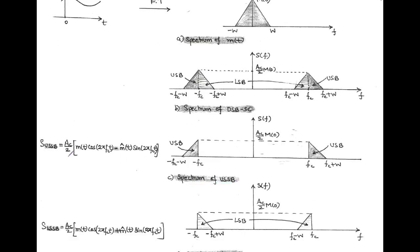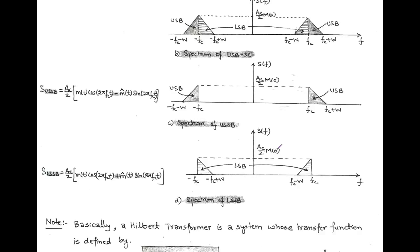The upper single sideband equation is (A_C/2)[m(t)·cos(2π·f_C·t) − m̂(t)·sin(2π·f_C·t)], with a negative sign between the two terms. To get the lower single sideband, we suppress the upper sideband. The lower single sideband equation is (A_C/2)[m(t)·cos(2π·f_C·t) + m̂(t)·sin(2π·f_C·t)], with a positive sign between the two terms.